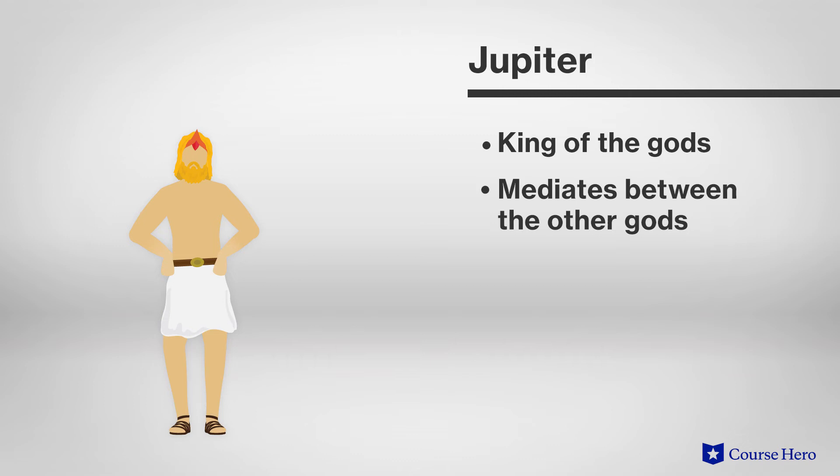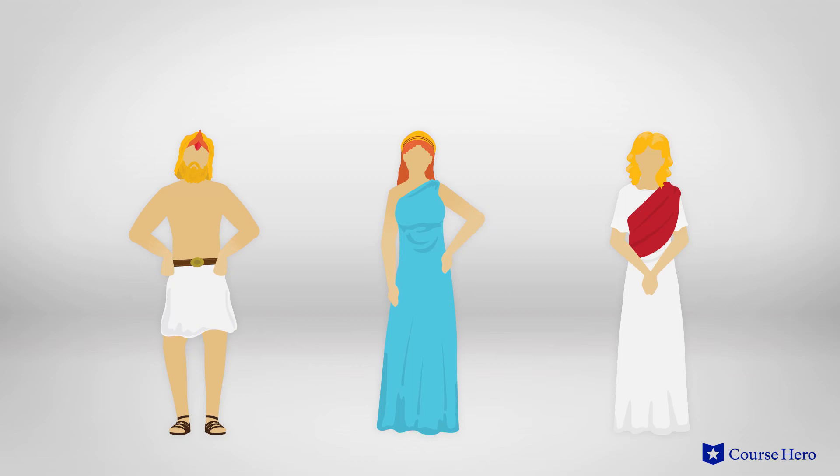He indulges his wife Juno and his daughter Venus in their efforts up to a point. Virgil portrays him as mostly calm and measured in contrast to Juno's vengeful anger and as the enforcer of Aeneas' fate. Jupiter supports its inevitability.